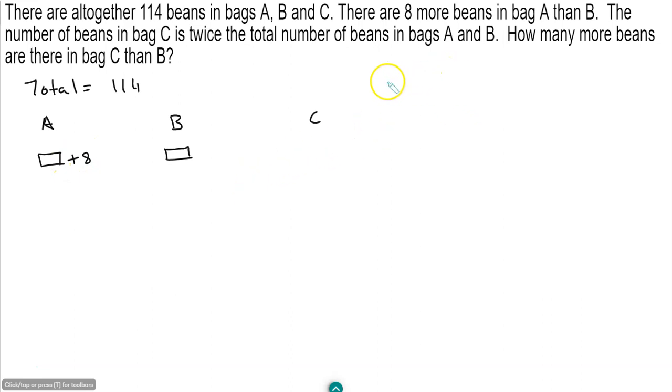Now they tell us bag C has twice the total number that bag A and bag B have. So let's add up bag A and bag B first. So that will become 2 units plus 8.